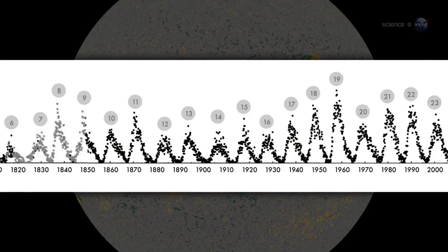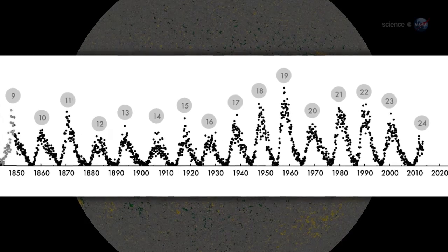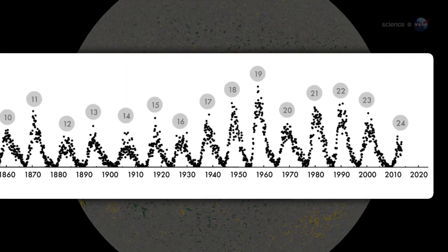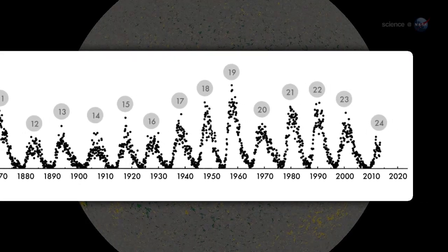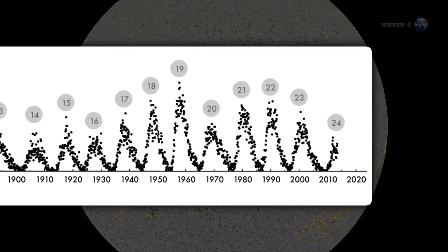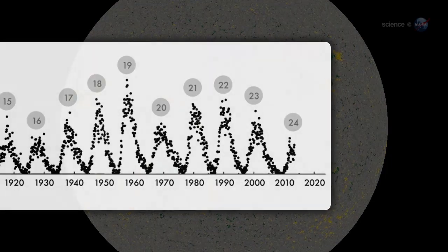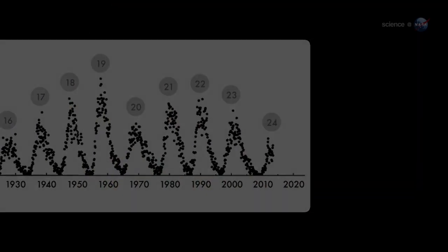The Sun's magnetic field changes polarity approximately every 11 years. It happens at the peak of each solar cycle, as the Sun's inner magnetic dynamo reorganizes itself. The coming reversal will mark the midpoint of solar cycle 24. Half of SolarMax will be behind us, with half yet to come.